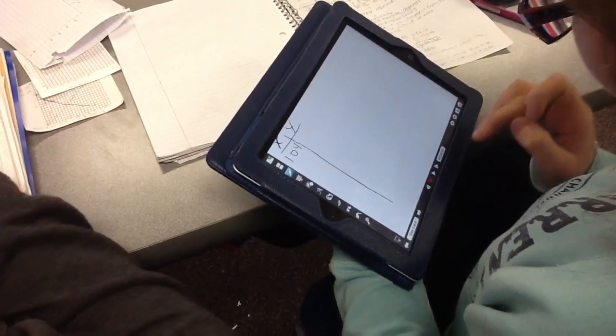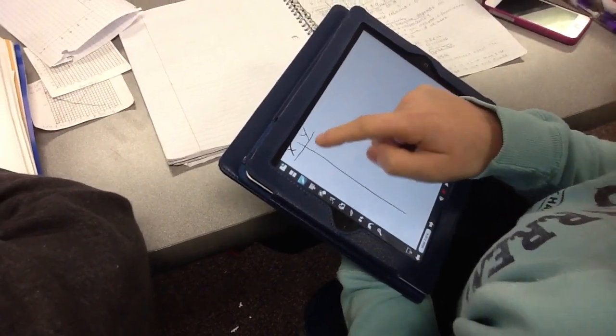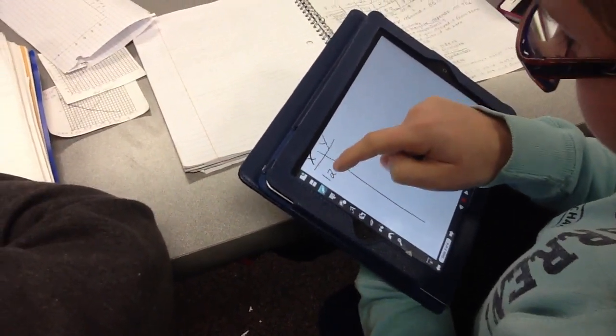The student has chosen to create a graph using Explain Everything. She is going to use that while she is speaking to the teacher about what she has learned.